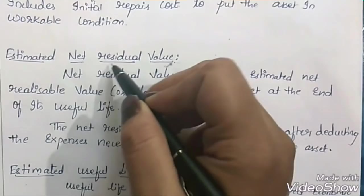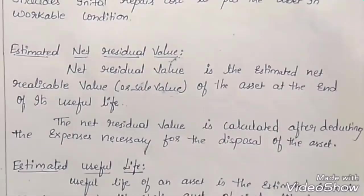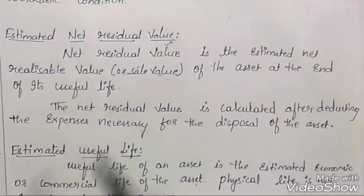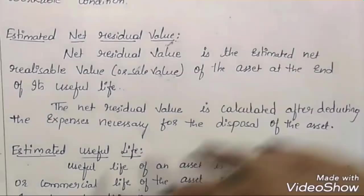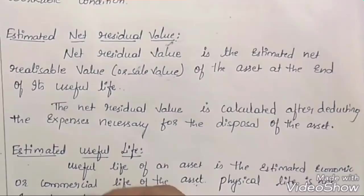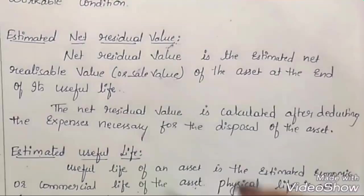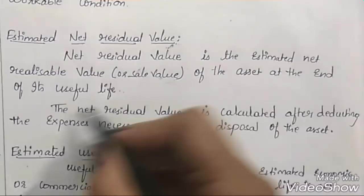The third factor is estimated useful life — the time period for which the asset is in working condition. Here, economic and commercial life of the asset is important, not physical life, because the machinery may be visible for many years but what matters is whether it is in working condition or not. Hence, estimated useful life is a factor which affects the amount of depreciation.